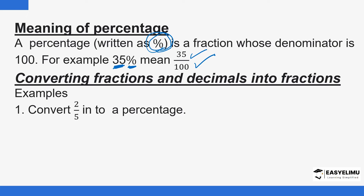Because a percentage is also a fraction, and a fraction can be written as a decimal, how do you convert fractions and decimals into percentages? For example: convert 2 over 5 into a percentage. You simply multiply by 100. So 2 over 5 multiplied by 100 — 5 goes into 100 twenty times, and 20 times 2 is 40 — so this fraction written as a percentage is 40 percent.